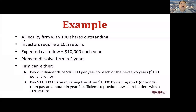Let's look at this example. This firm is unlevered and has 100 shares outstanding. The required return is 10% and the expected cash flow is $10,000 each year. The firm plans to be dissolved in two years. The firm has two choices: first, it pays a dividend of $10,000 per year for each of the next two years, which is $100 per share. Or it pays $11,000 this year, raising another $1,000 by issuing stock or bonds, then pays an amount in year two sufficient to provide new shareholders with a 10% return.